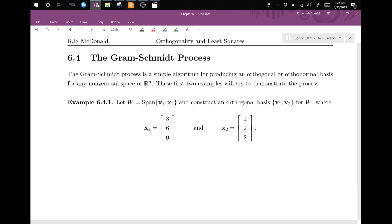And so the way that we're going to do this, I'll try to develop as we go along, and then later on we'll actually put together an algorithm for this. So the point of this, we have x1 and x2 in this example: [3, 6, 0] and [1, 2, 2].